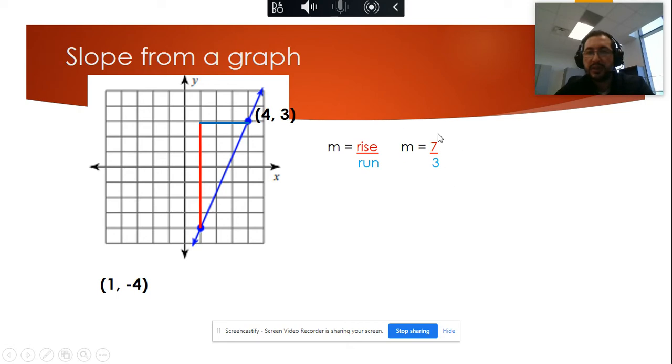So this one, 7 divided by 3, cannot be simplified. We leave it as a fraction and that will be my slope, seven thirds.